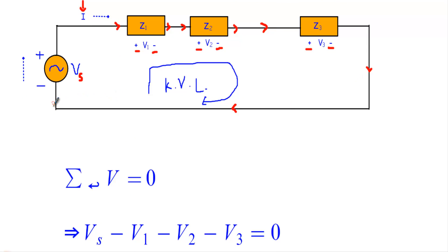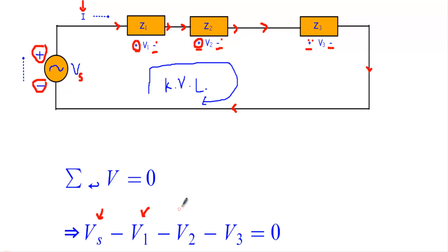Revolving the loop clockwise: I first encounter Vs with its negative terminal first and positive terminal later, so its sign is positive: +Vs. Then I encounter V1 with its positive terminal first, so it is −V1. Then V2 with positive terminal first: −V2. Then V3 with positive terminal first: −V3. So Vs is supplying voltage while V1, V2, and V3 are voltage absorptions with negative signs.